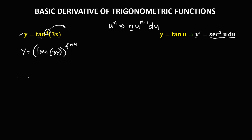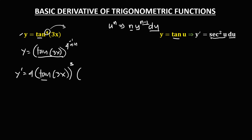Using the chain rule, n is the exponent, so y' = 4 times tan(3x) to the power n−1 — that's 4−1 = 3 — times the derivative of tan, which is sec²(u), where u is 3x, times the derivative of 3x, which is 3.